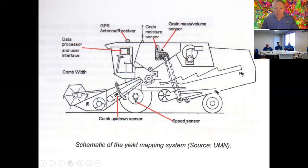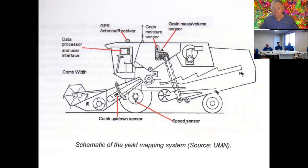For most yield monitors on the market you also need grain moisture, because as the moisture changes the density changes and the flow characteristics change. Almost all monitors need moisture content to calibrate properly. So if your moisture sensor is playing up, you're going to get really poor yield data because it's absolutely relied on to provide that calibration. I'll talk about the two different types of sensors: one of them needs moisture and the other one doesn't.